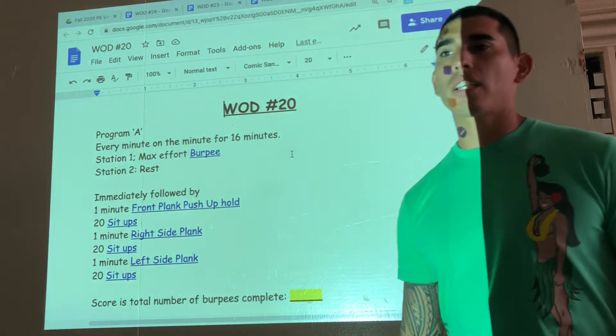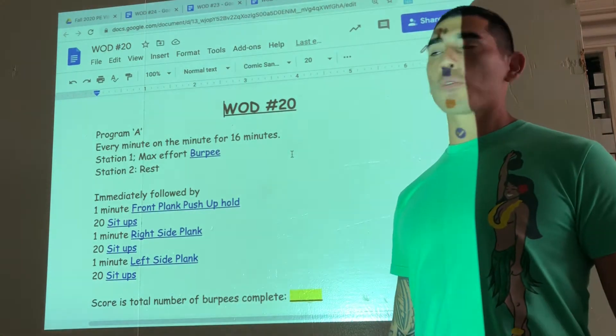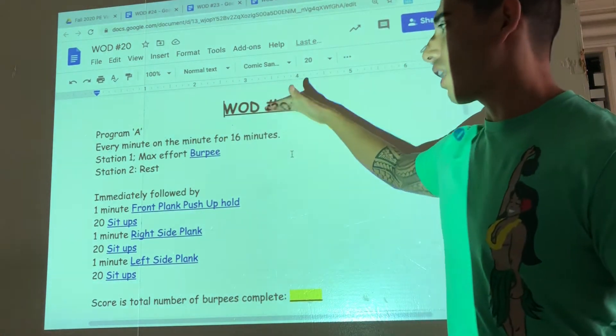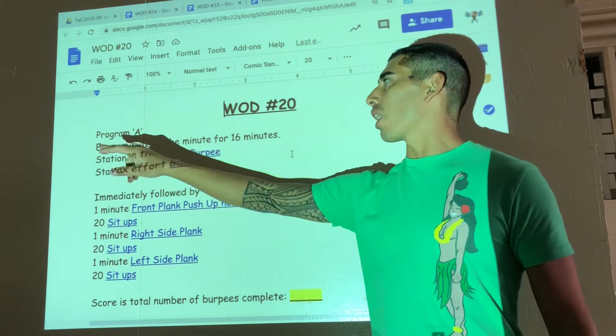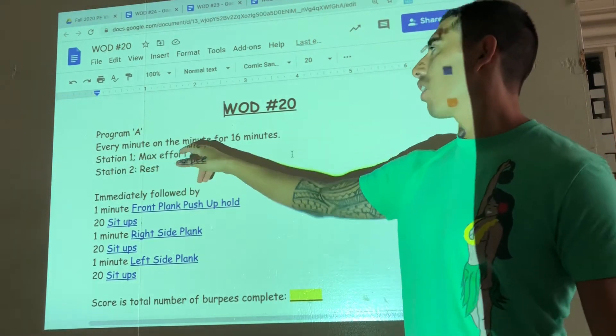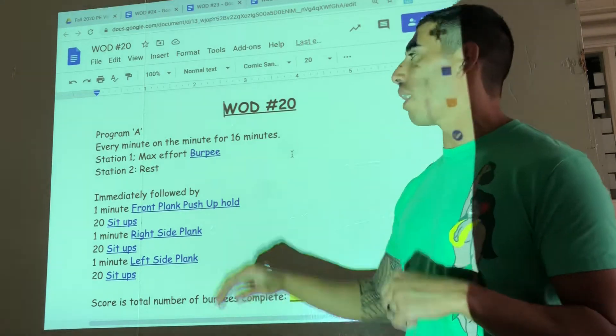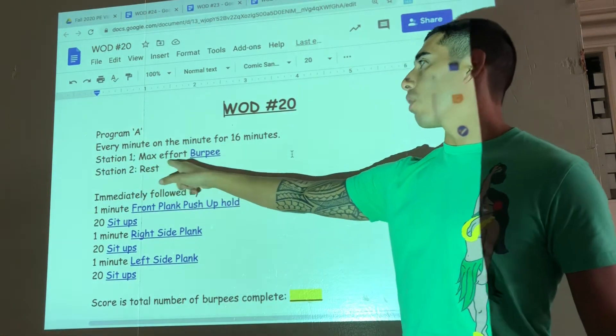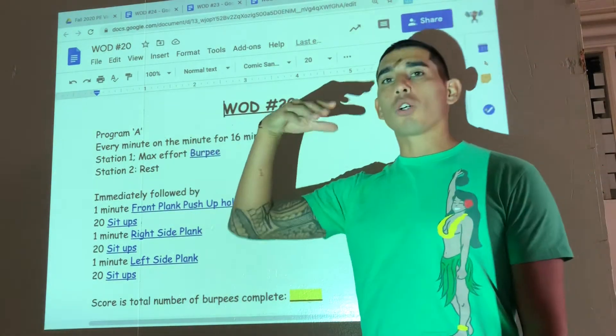All right guys, welcome back. We have Workout of the Day number 20. This is going to be a hyperlink for you guys for the explanation. Program A: every minute on the minute for 16 minutes, so it's an EMOM. Station one is max effort burpees.